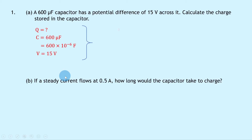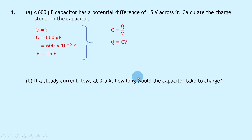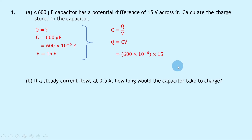Writing down our equation, we have C equals Q over V. Rearranging for charge Q, we can multiply these two together to get Q equals CV. Substituting in the numbers gives us 600 times 10 to the minus 6 times 15, and putting that into your calculator should give you a final answer of 9 times 10 to the minus 3 coulombs.